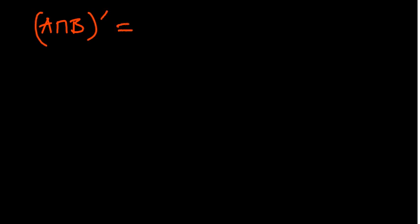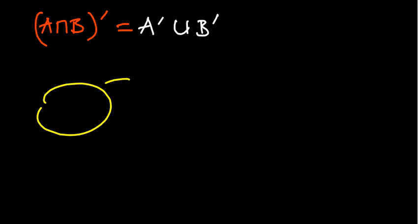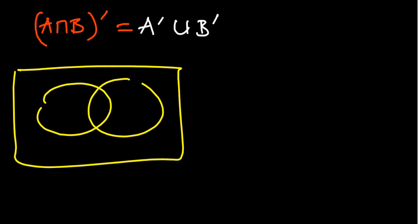Look at the first one. We have A intersection B, complement. We've seen that it gives us A complement union B complement. We can prove this by shading. So what does A intersection B mean? If you have two sets in a Venn diagram — this is your A, that is your B — the intersection of A and B is the region in between, that's A intersection B.